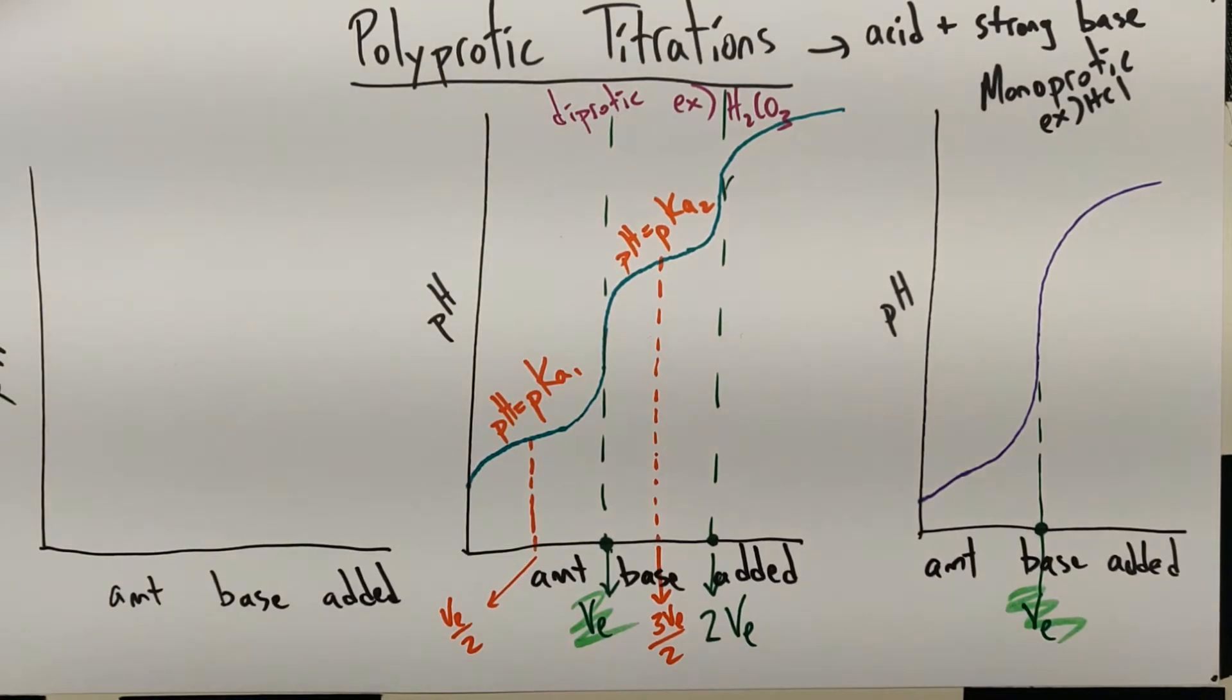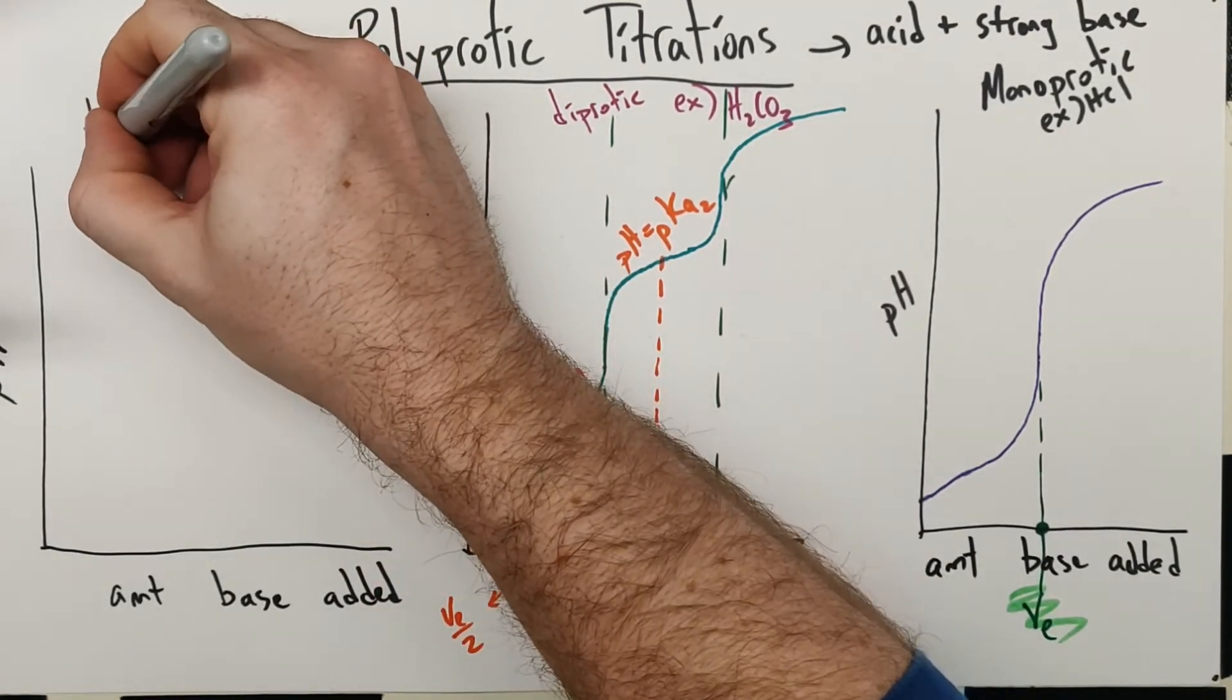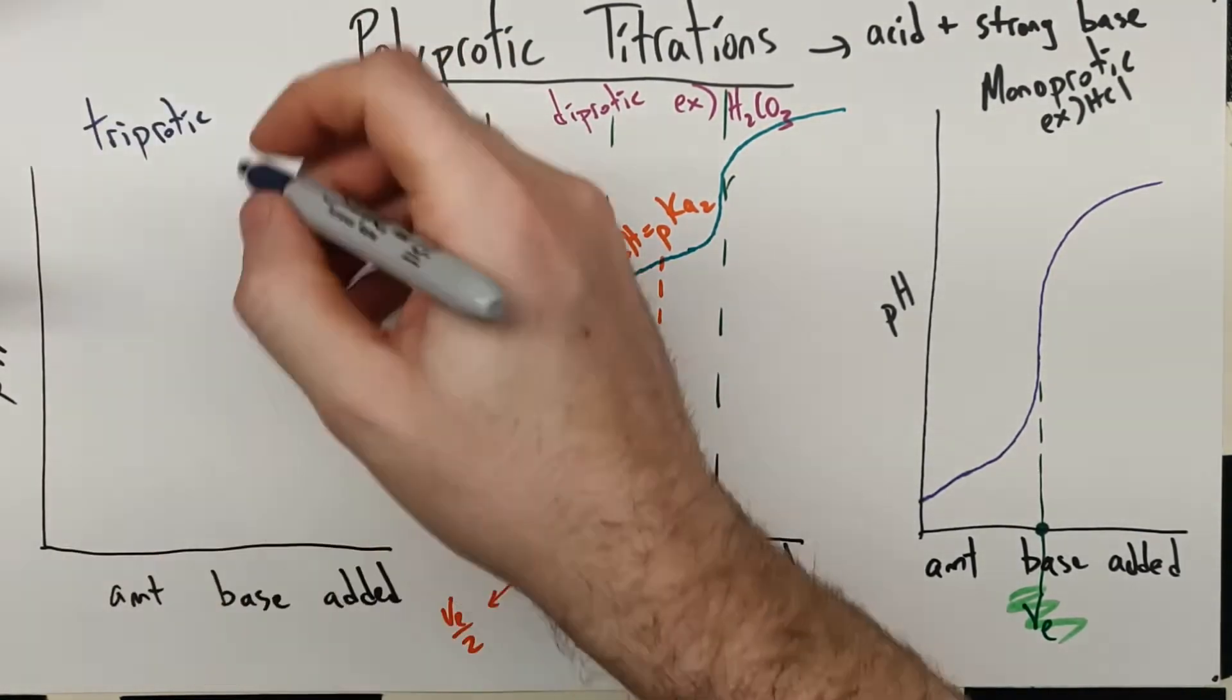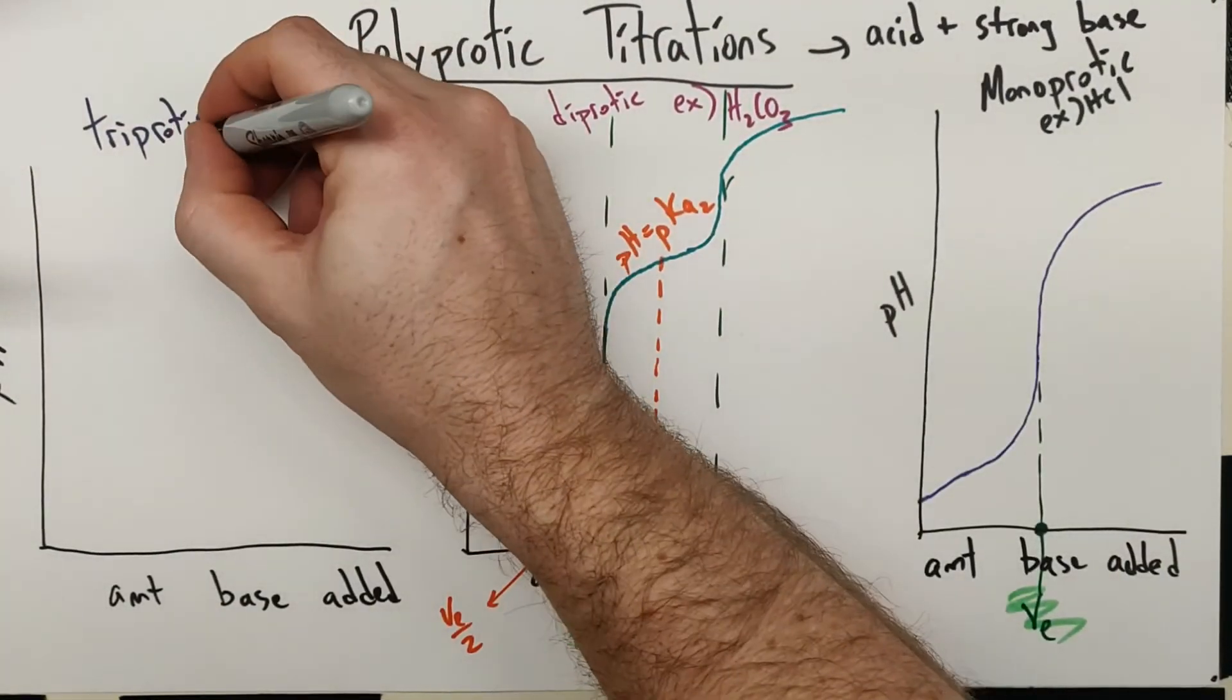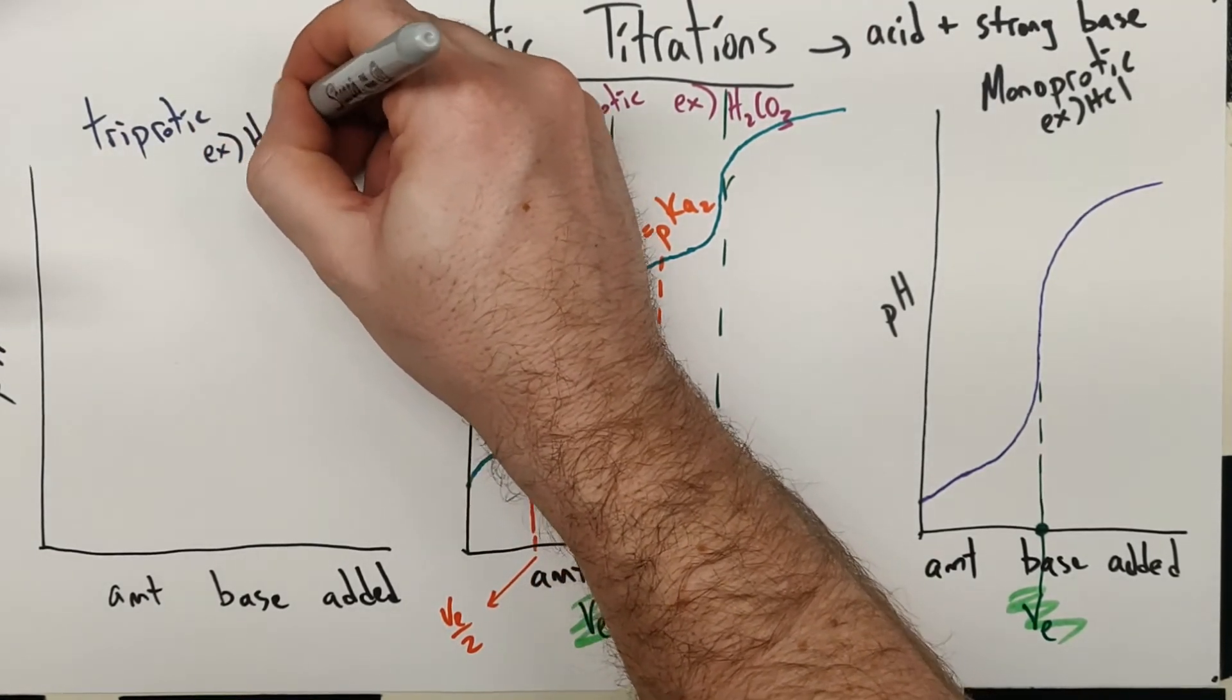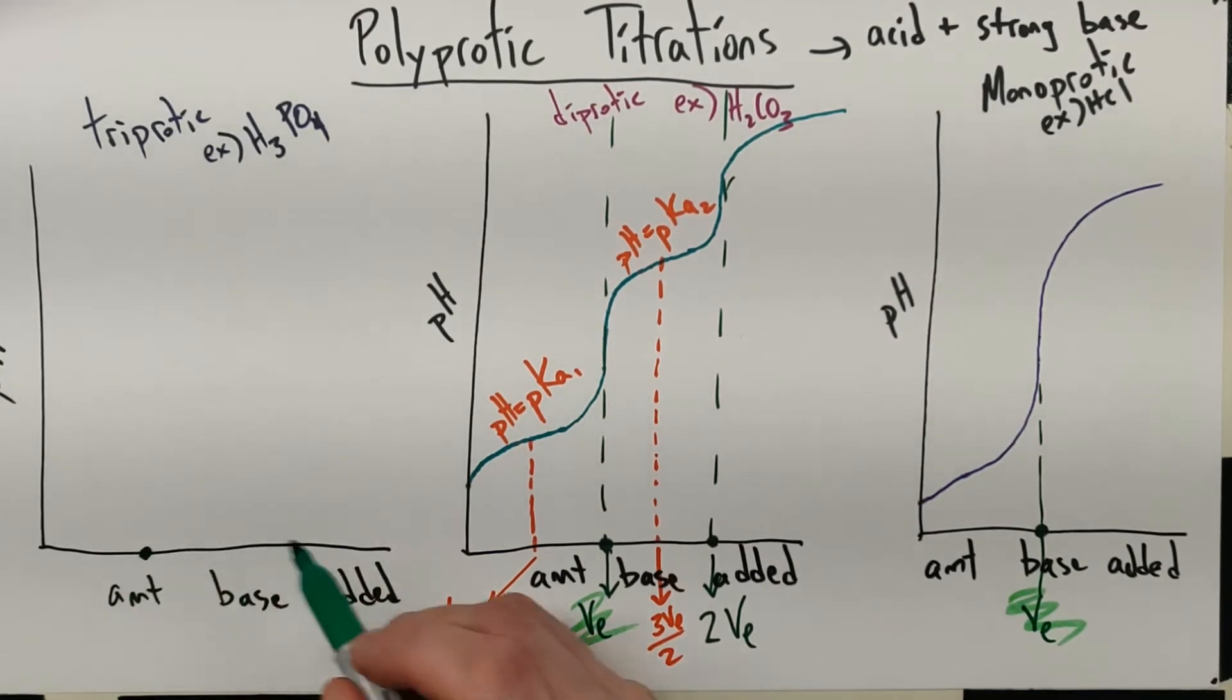Now let's look at a triprotic and then we'll jump back and look at what H2SO4 would look like. We'll look at a triprotic. Again, we're working with a strong base here. For example, we'll say something like H3PO4. And this is theoretical because you really don't see the third H coming off in this. But as we're looking at these numbers here, we're going to see the exact same behavior.